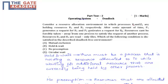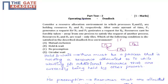Consider a resource allocation environment in which process P1 and P2 are holding resources R2 and R1. Process P1 holds resource R2, so we have to draw an arrow mark from resource R2 to process P1. Process P2 is holding resource R1, so arrow mark from R1 to P2.